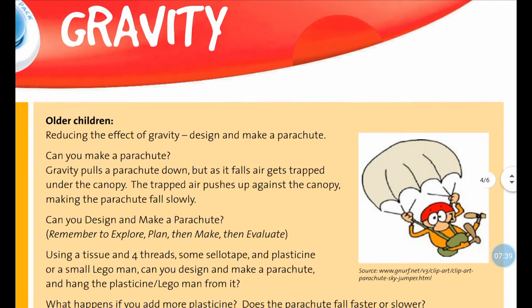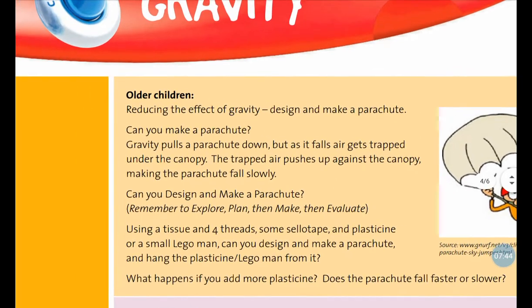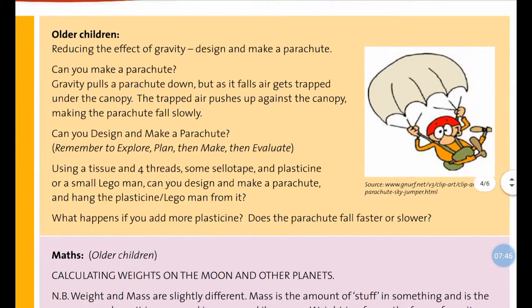Now we're going to have a look at page four, where it says older children. We're going to design and make a parachute — we're going to try and reduce the effect of gravity. It says: can you make a parachute? Gravity pulls the parachute down, but as it falls, air gets trapped under the canopy — the material part at the top of the parachute. The trapped air pushes up against the canopy, making the parachute fall slowly.